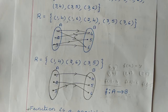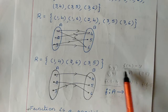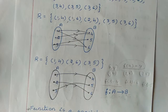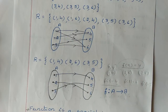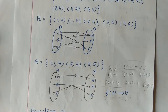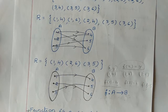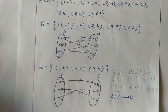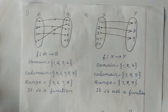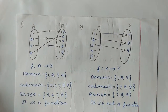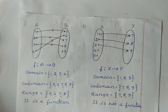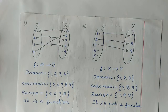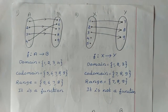Now we will consider some cases of functions to understand whether those examples come under function or not. In the first case, two sets are given: A consists of four elements {1, 2, 3, 4} and B has {5, 6, 7, 8, 9}. We have to check whether this is a function or not.